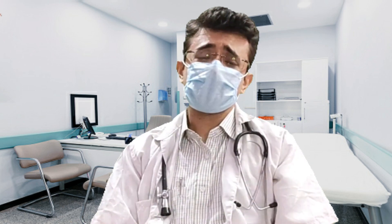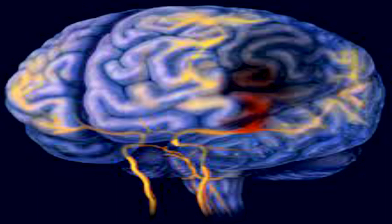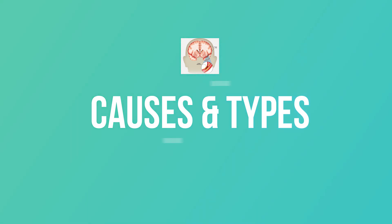A brain stroke occurs when the blood supply to some part of your brain is interrupted or reduced, preventing brain tissue from getting oxygen and nutrition. As a result, brain cells begin to die within minutes, causing a medical emergency which needs immediate management — otherwise it may cause brain damage or even death.